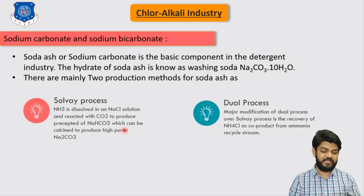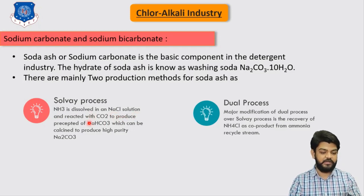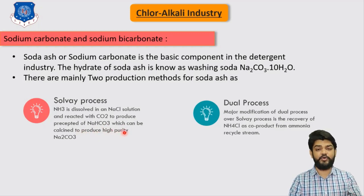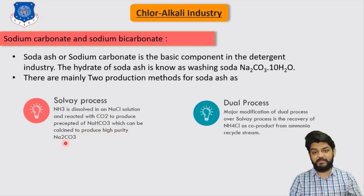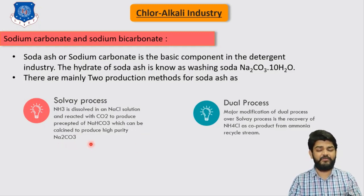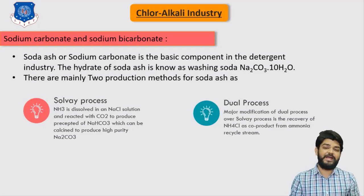In the Solvay process, ammonia is dissolved in a NaCl solution and reacted with CO2 to produce a precipitate of sodium bicarbonate, NaHCO3, which can then be calcined to produce high-purity sodium carbonate, Na2CO3. So in the Solvay method, we dissolve ammonia into NaCl solution, react it with CO2, and then calcine it to produce sodium carbonate.